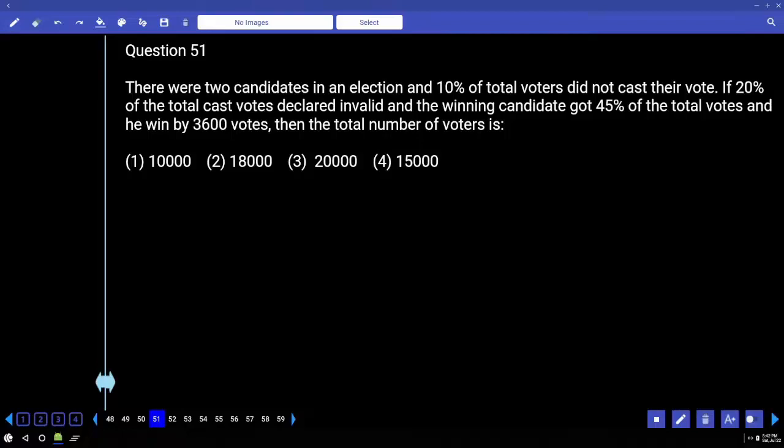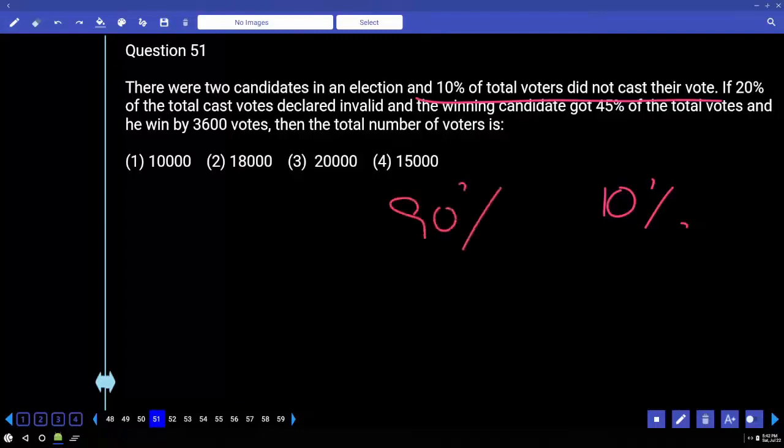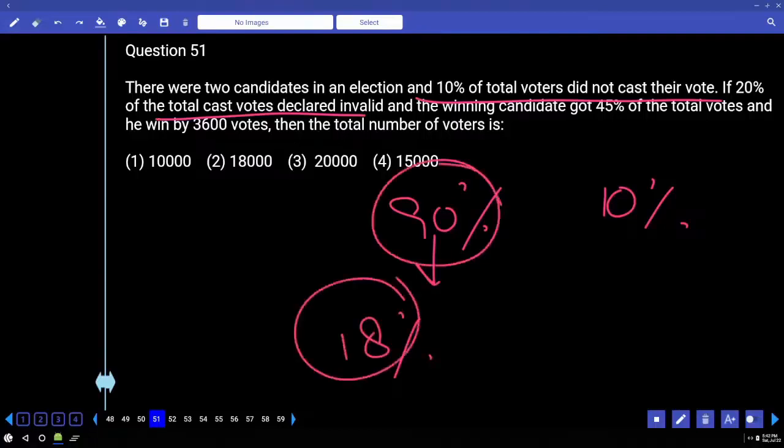Here, 10% of total voters did not cast their vote. There were 100% and 10% did not cast votes, that means 90% cast votes. In the event, 20% of the total cast votes - what is 20% of 90? 10% is 9, 20% is 18. 18% are invalid. Out of 90, 18% are invalid. Remaining 72.